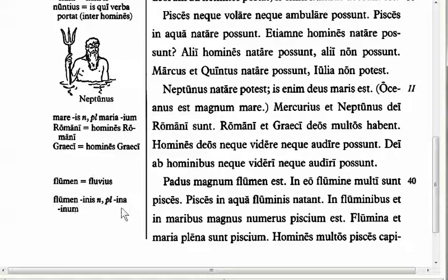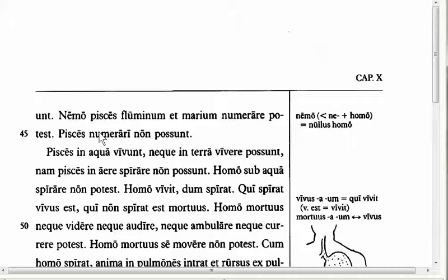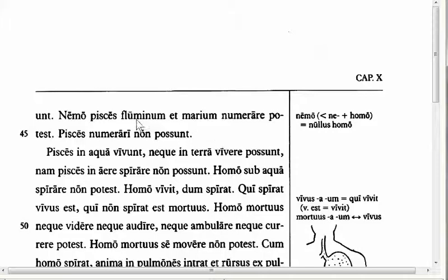The next feature I'd like to point out is in line 44. We have homines mutis piscis capiunt, nemo pisces fluminum et marium numerare potest — nobody is able to number the fish of the rivers and the seas. Here we have nemo, which is just a combination — as we see in the margin — of ne plus homo, meaning 'no person' or 'no man,' the same as nullus homo. We would just translate it as 'nobody.'